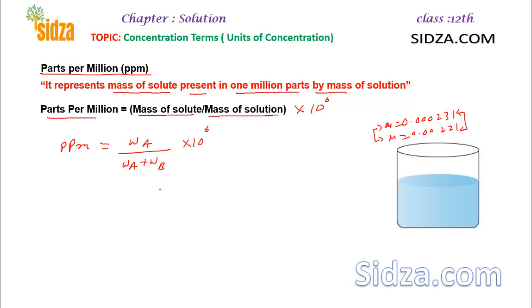We can also express PPM in terms of volume: the volume of component A divided by the total volume (volume of A plus volume of B), multiplied by 10⁶. That gives PPM in terms of volumes, as opposed to PPM in terms of weights discussed earlier. Hope you got the concept. Thanks for watching the video, bye for now.